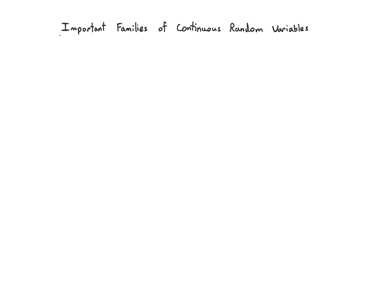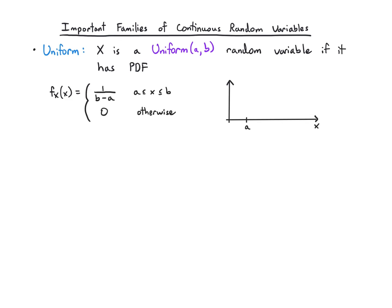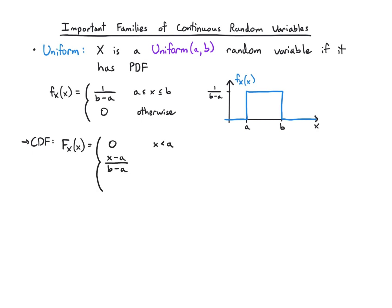Let's take a minute to introduce three important families of continuous random variables. To start, let's go with the simplest one, which is uniform. X is uniform(a, b) if it has the following PDF: it is flat between a and b, and zero otherwise. That represents the fact that you are equally likely to take any value between a and b and nothing else. The CDF is just a constant slope between a and b, and it's one after that.